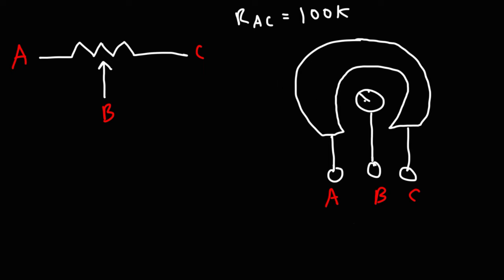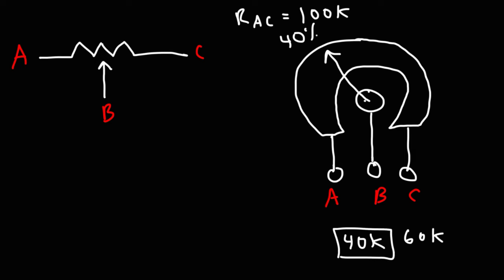Likewise, if we turn it to the 40 percent mark, the resistance between A and B will be 40k, while the resistance between B and C will be 60k. So that's just a visual illustration of how this potentiometer works and how you get the corresponding resistance values based on which terminals you're using.